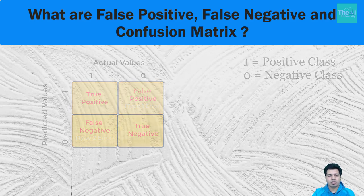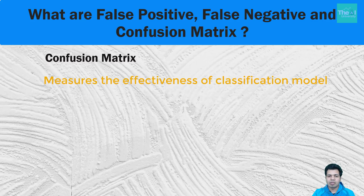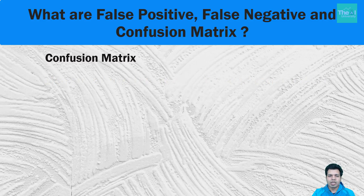Let's move on to another concept: the confusion matrix. The confusion matrix measures the effectiveness of our model — the better the effectiveness, the better the performance. We can say that confusion matrix is a performance measurement for machine learning classification problems where output can be two or more classes. It is a table with four different combinations of predicted and actual values, extremely useful for measuring recall, precision, specificity, accuracy, and AUC ROC curve.